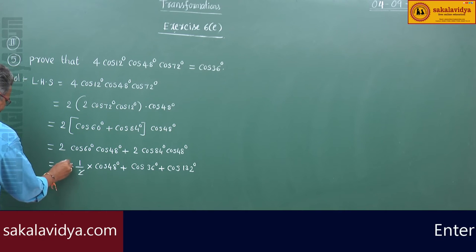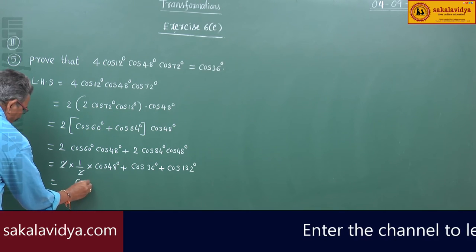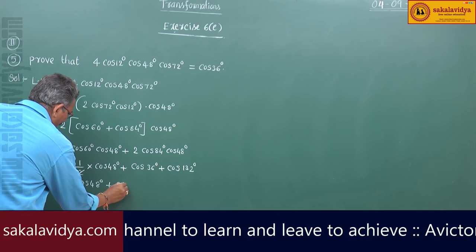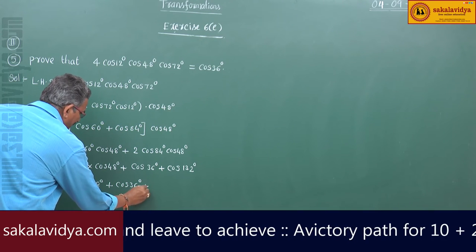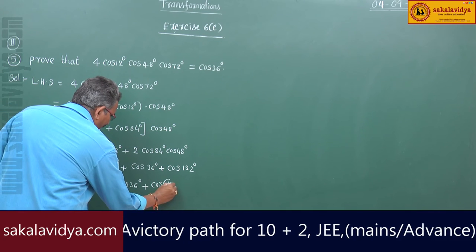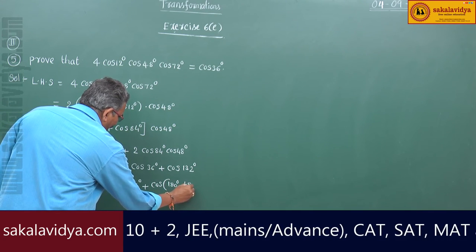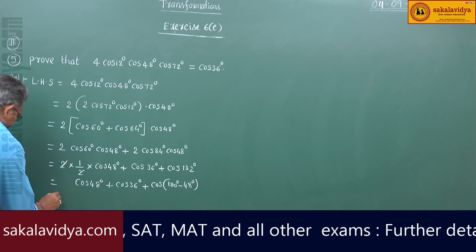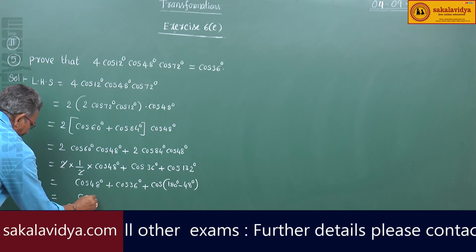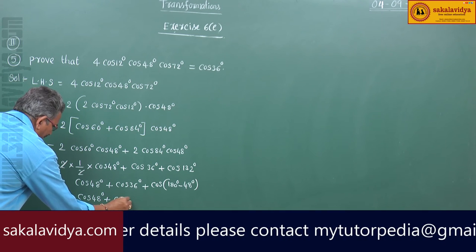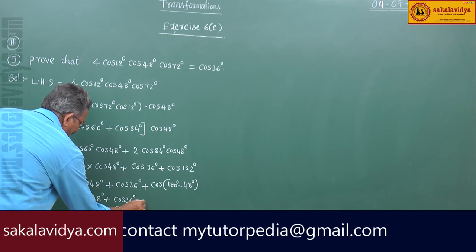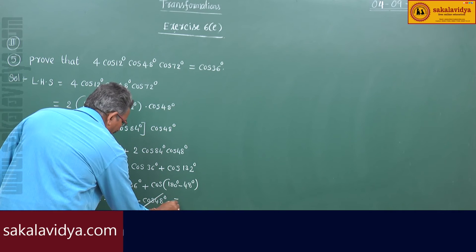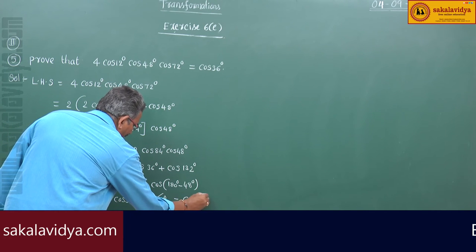The 2's get cancelled. This will be cos48 plus cos36 plus cos of (180 minus 48), which equals cos48 plus cos36 minus cos48. These two cos48 terms get cancelled, and we have cos36 degrees. This is RHS.